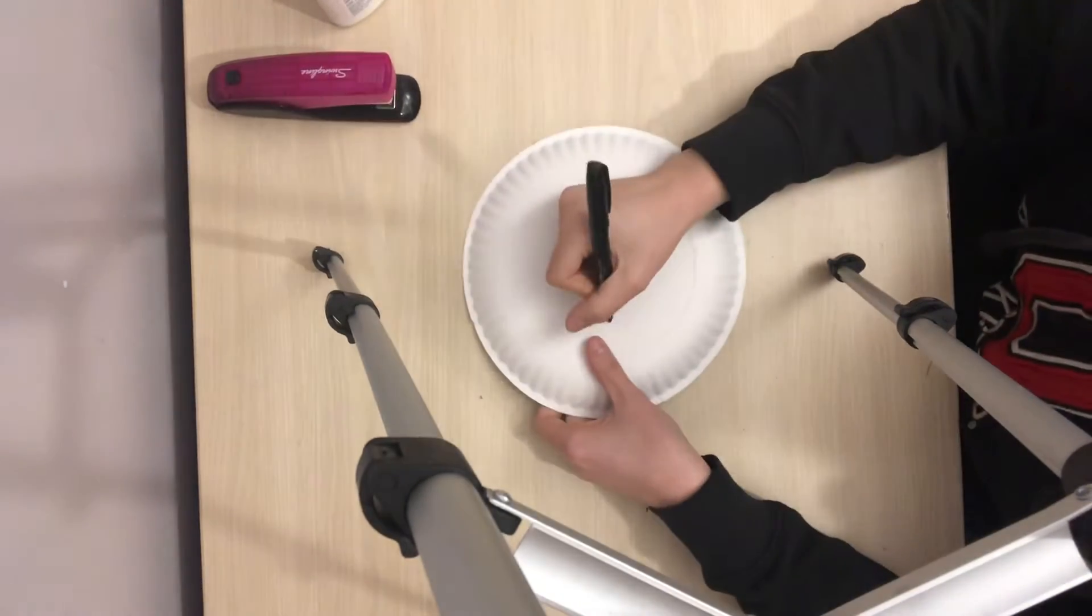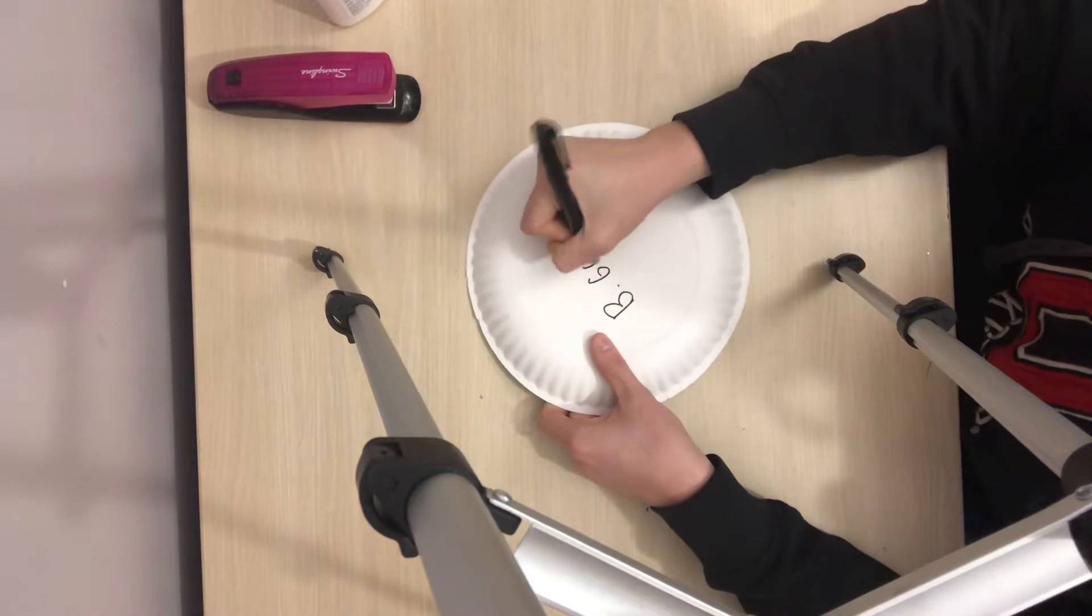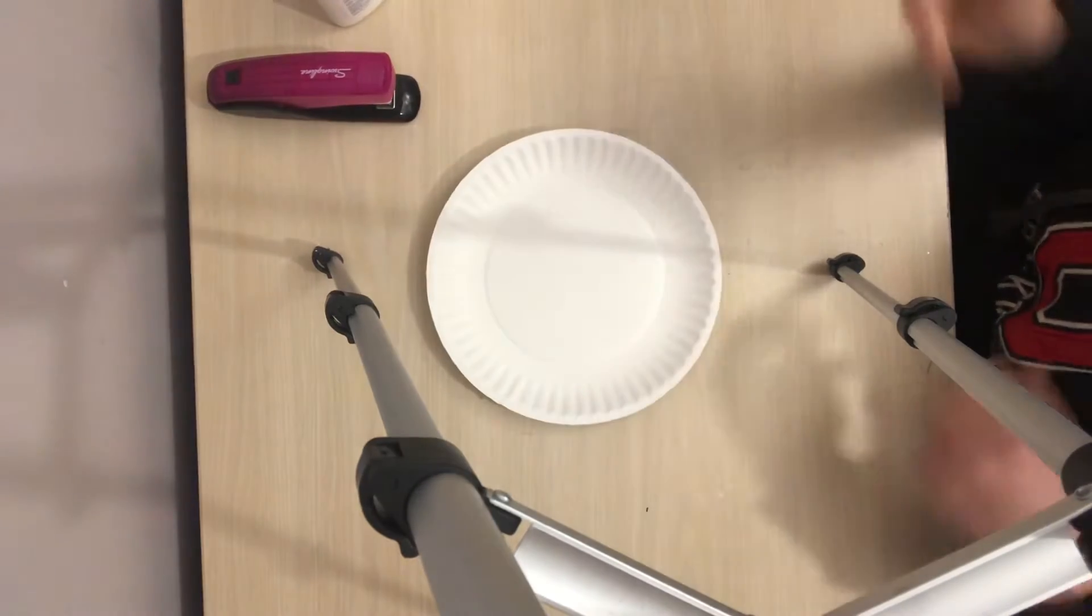The first step is to write your name on the back of the plate. When you're done, flip it over. Pause here.